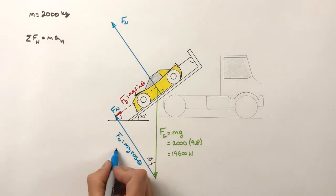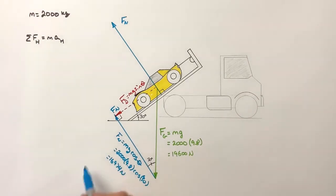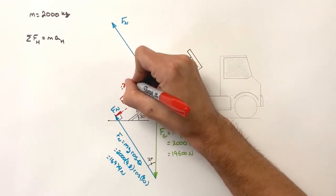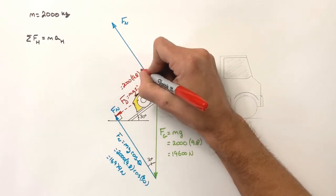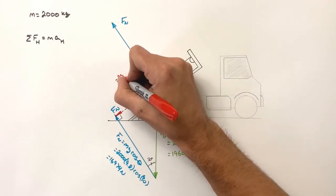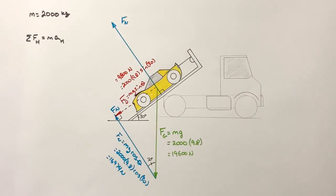Working out FN, we have 2,000 times 9.8 times the cosine of 30. That's going to give us 16,974 Newtons. Now you play your own little sig fig game if you want here, depending on how far you want to take that. Our force down the hill, we'll do a similar thing here. So we'll have 2,000 times 9.8 times the sine of 30. Well, that's going to be 9,800 Newtons.